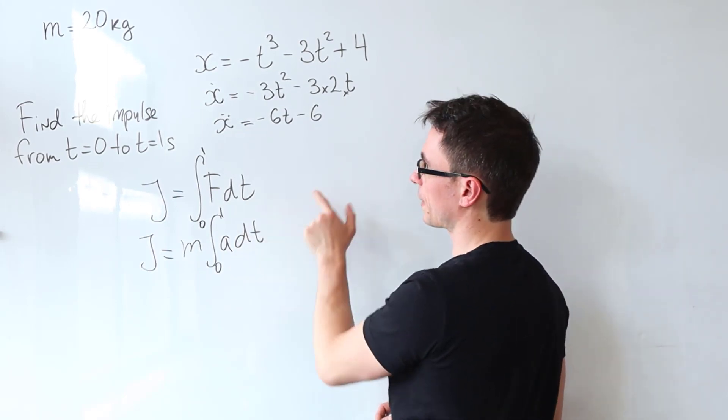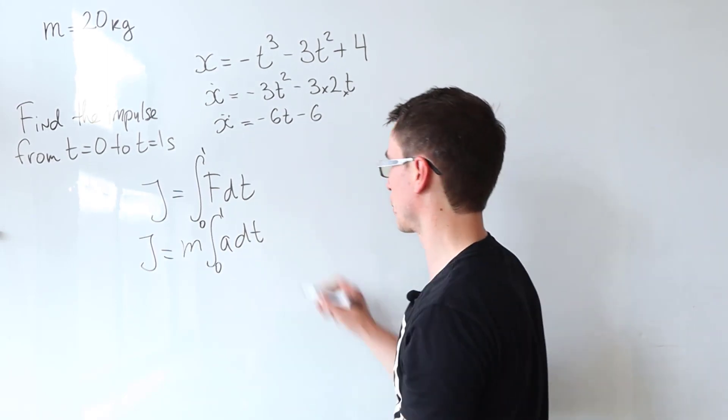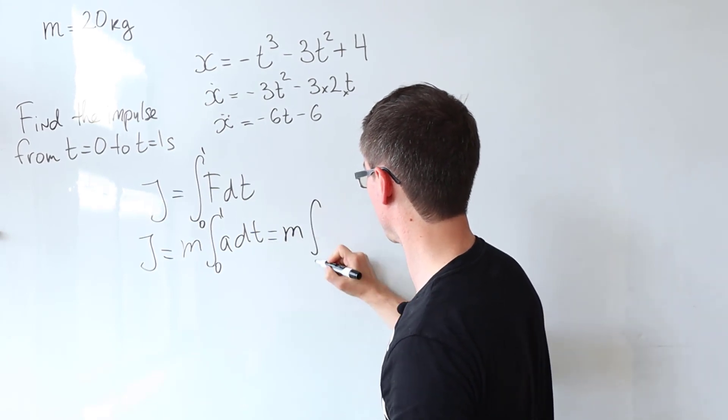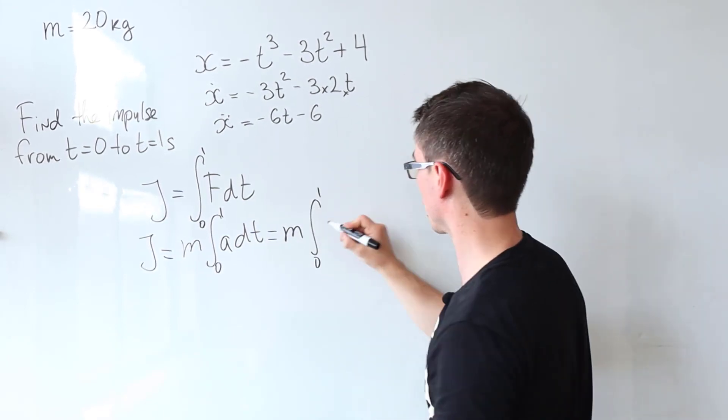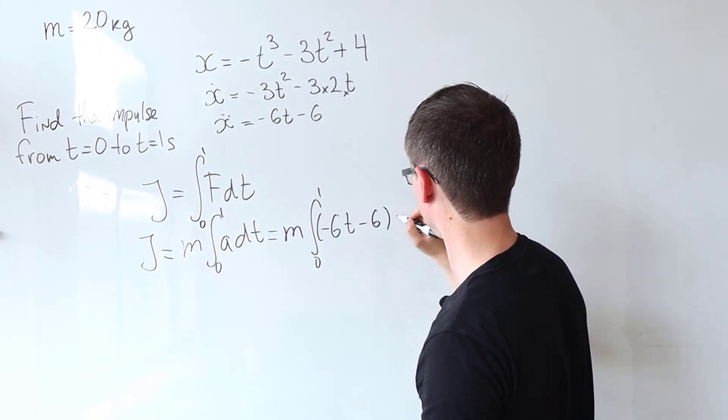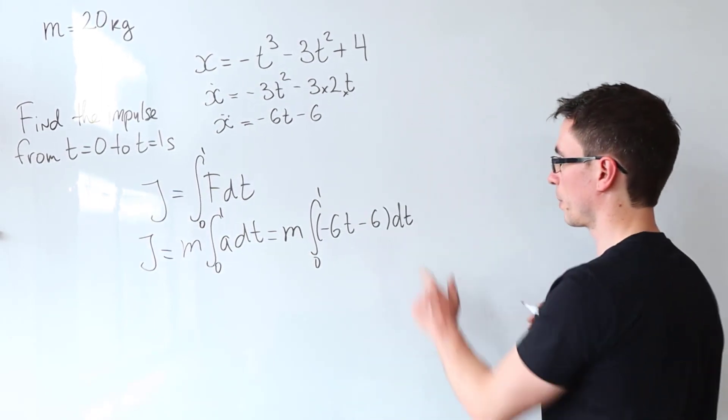The second derivative is just the acceleration. So we can take this expression and just plug this in here. So what we get is m times the integral from zero to one of minus 6t take away 6 integrated with respect to t.